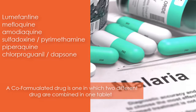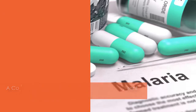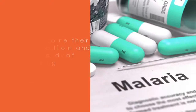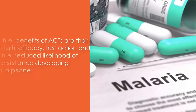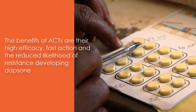Artemisinin derivatives include dihydroartemisinin, artesunate, and artemether. The benefits of ACTs are their high efficacy, fast action, and the reduced likelihood of resistance developing. In order to make best use of them — particularly since no alternative is likely for several years — it is critical to address issues of delivery, access, and cost.